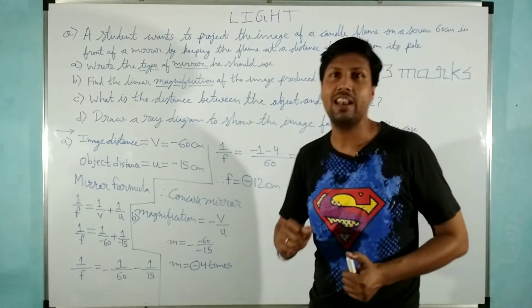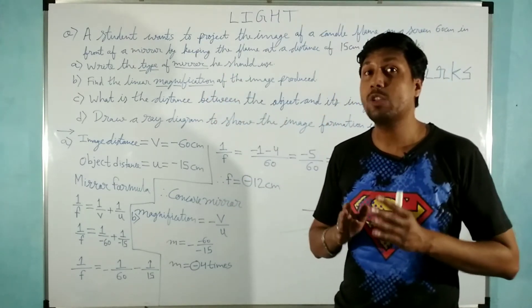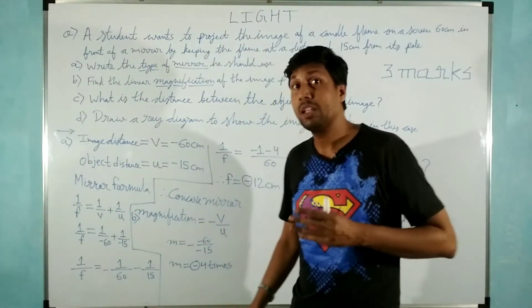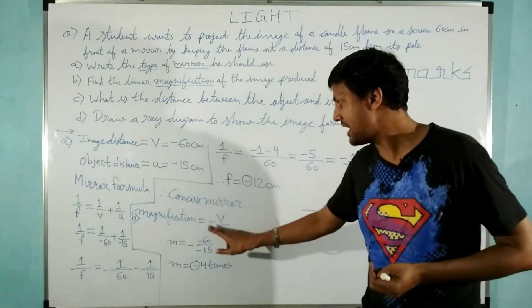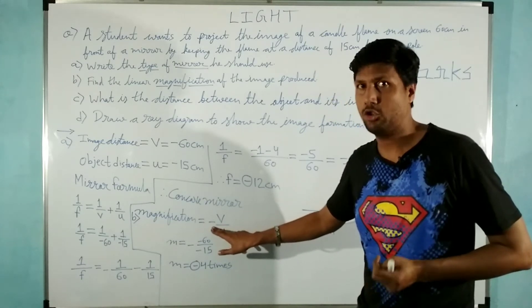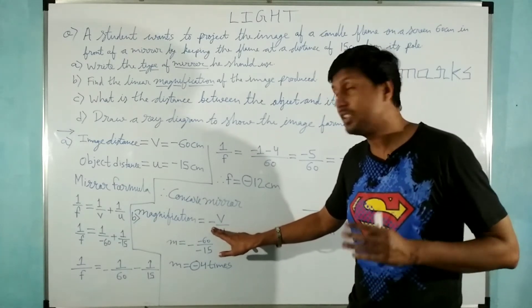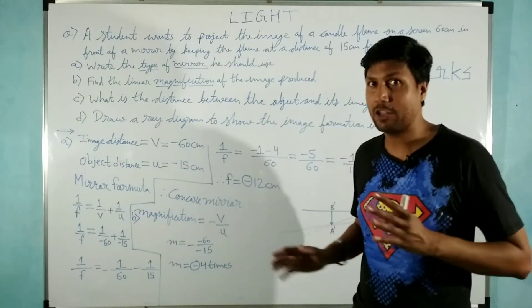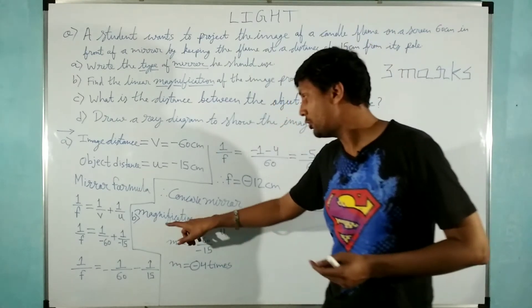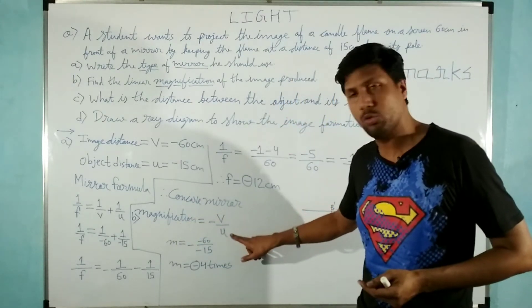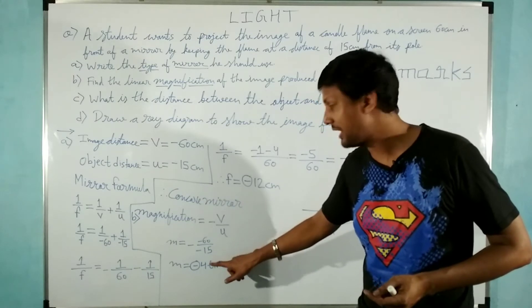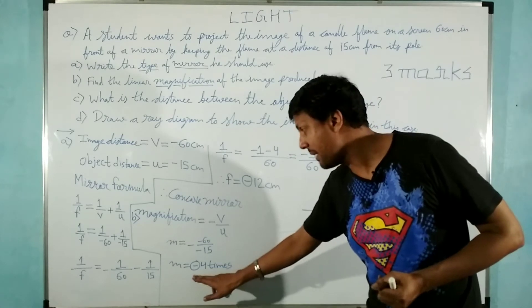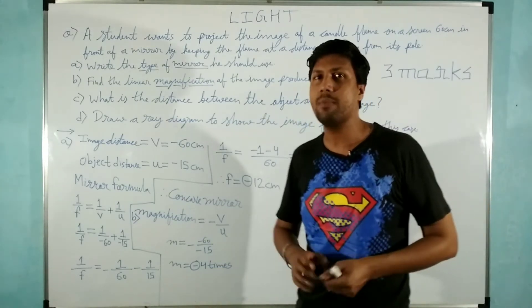So magnification is minus v upon u. So minus of minus 60 upon minus 15. So that will be minus four times. Again the magnification is minus four times. What does the minus sign indicate?